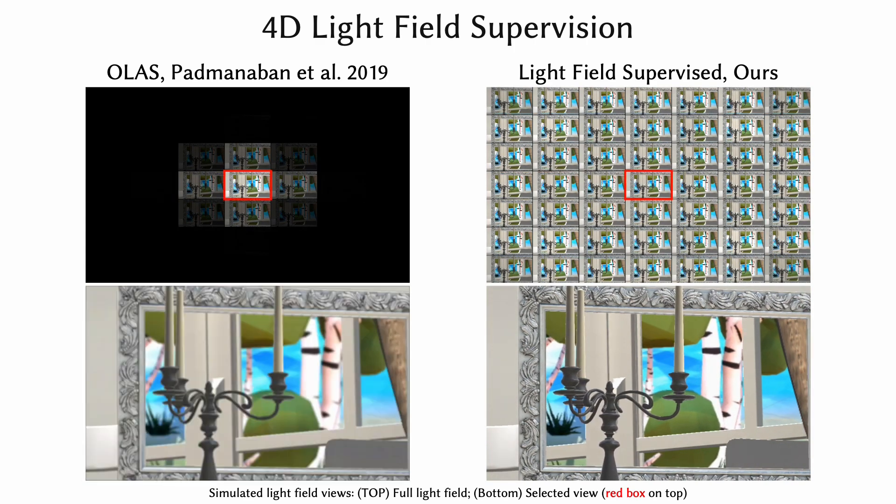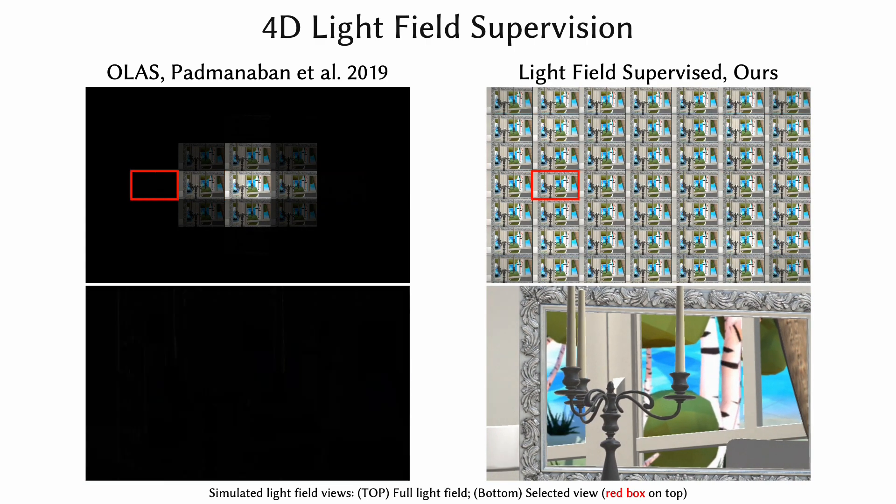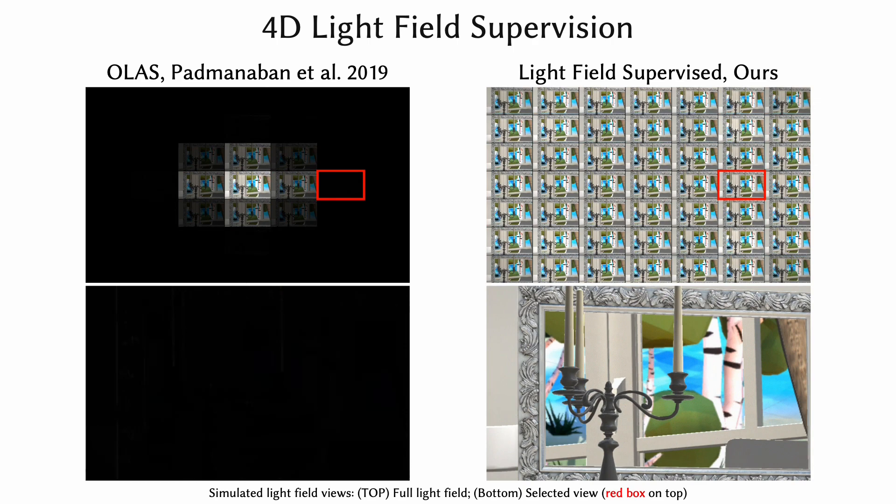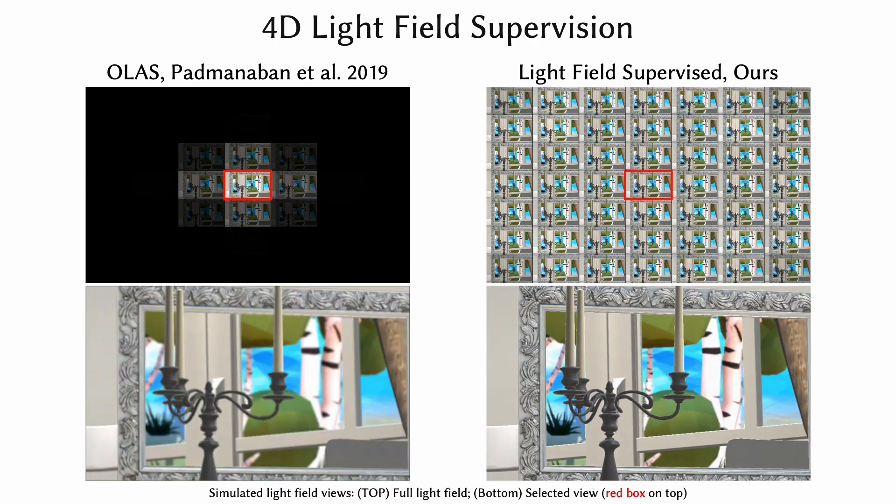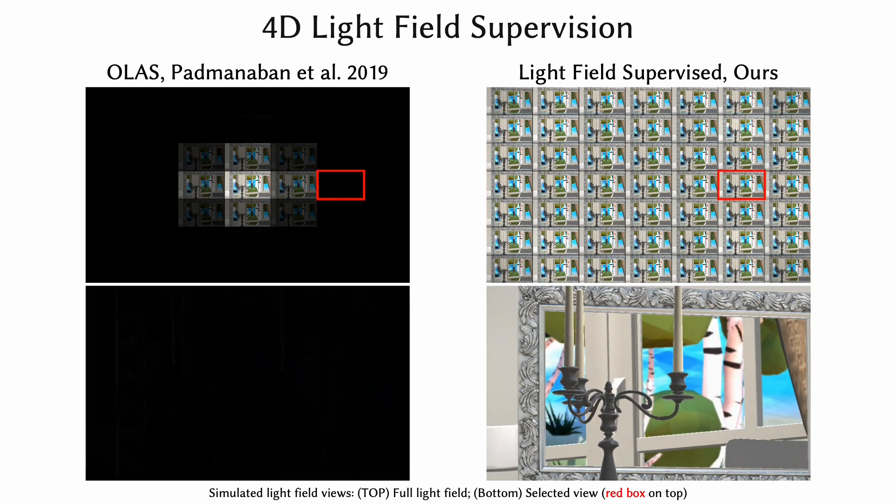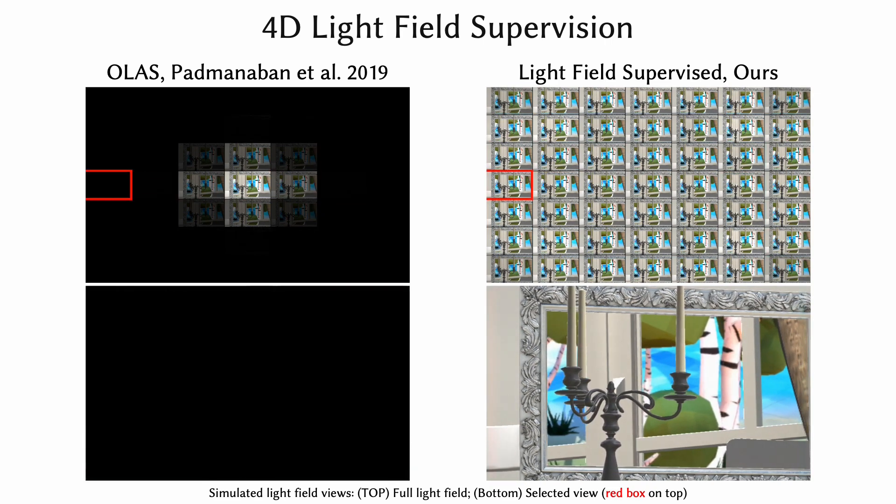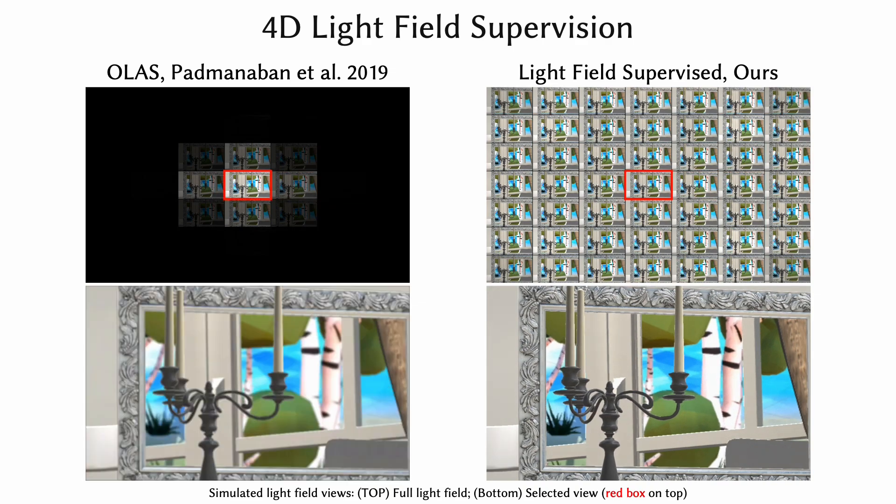With this, we can produce state-of-the-art light field holograms. Recent work, shown on the left, assumes a smooth target phase, which limits the bandwidth of reconstructed light field views. Since our novel technique, shown on the right, accurately reproduces a full set of light field views, we can produce view-dependent effects such as parallax.